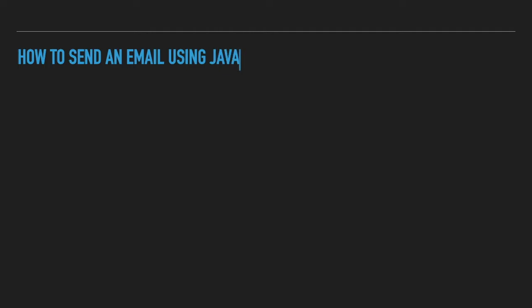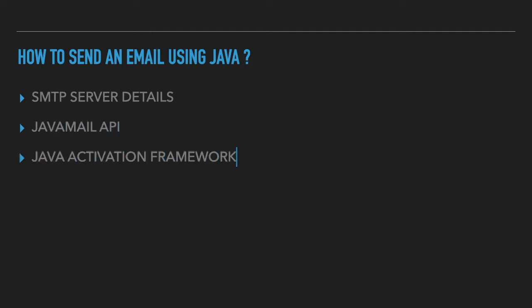For sending an email using Java code you basically need three important things. First one is your SMTP server details. Second one is your Java Mail API, and third one is Java Activation Framework, that is JAF. SMTP is Simple Mail Transfer Protocol, and it is used to link between two different servers for sending an email. The next two are just Java-provided APIs which you will use to send email using Java code.